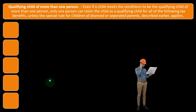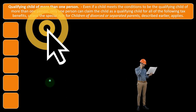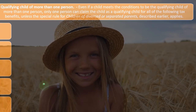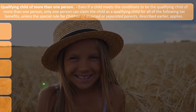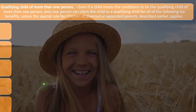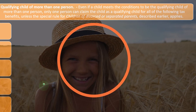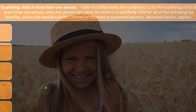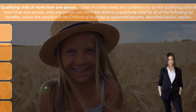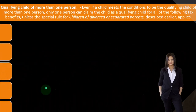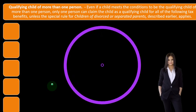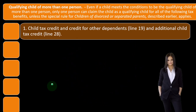Qualifying child of more than one person: even if a child meets the conditions to be the qualifying child of more than one person, only one person can claim the child as a qualifying child for all of the following tax benefits, unless the special rule for children of divorced or separated parents described earlier applies. The general rule is you can't have multiple people getting all these benefits for the same person with the same Social Security number — that will cause problems.